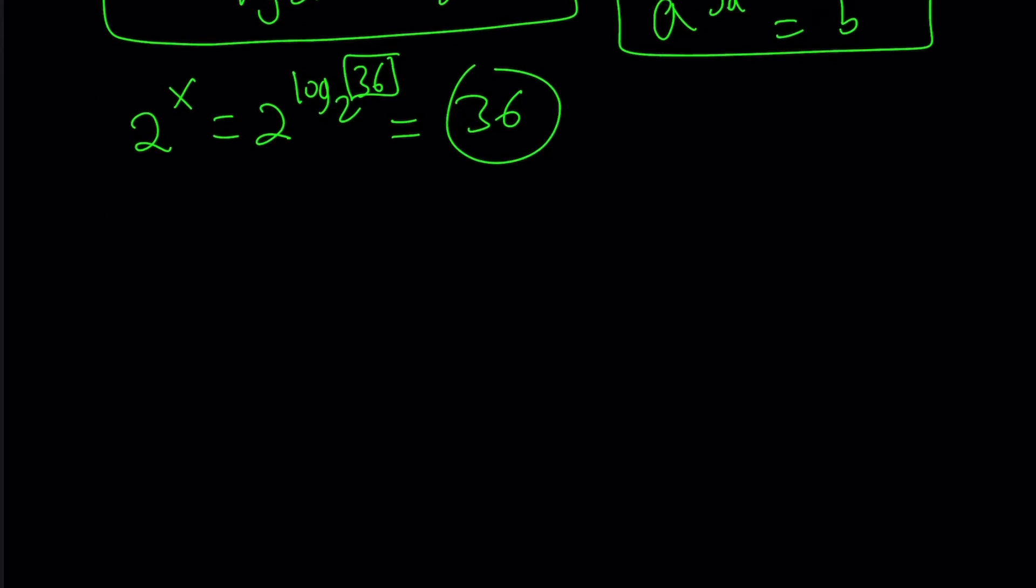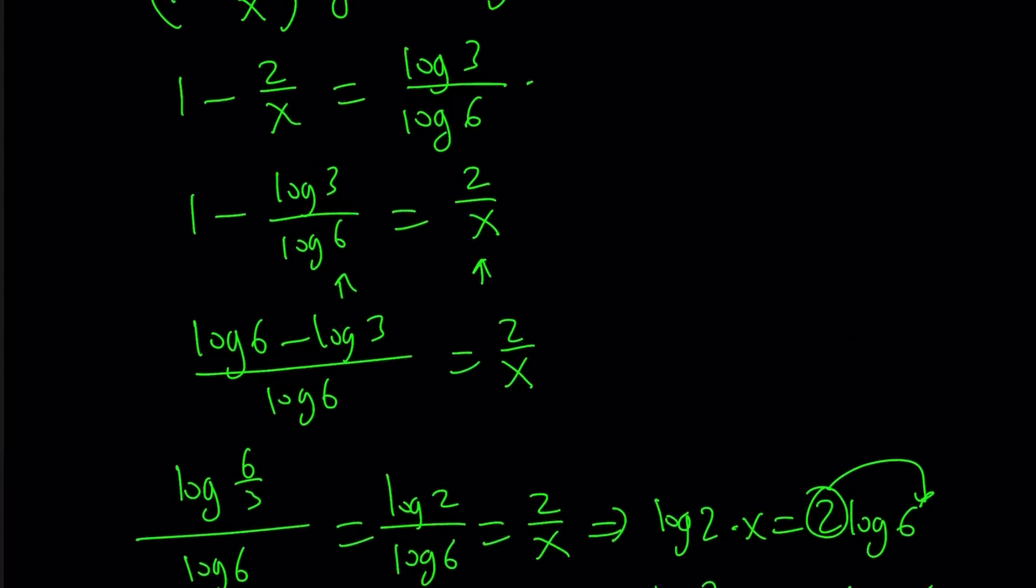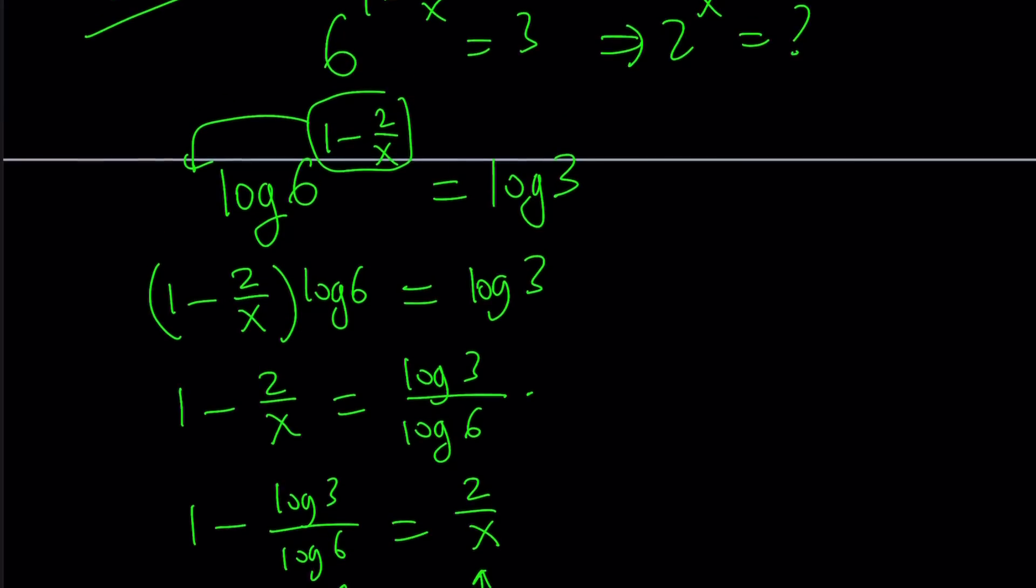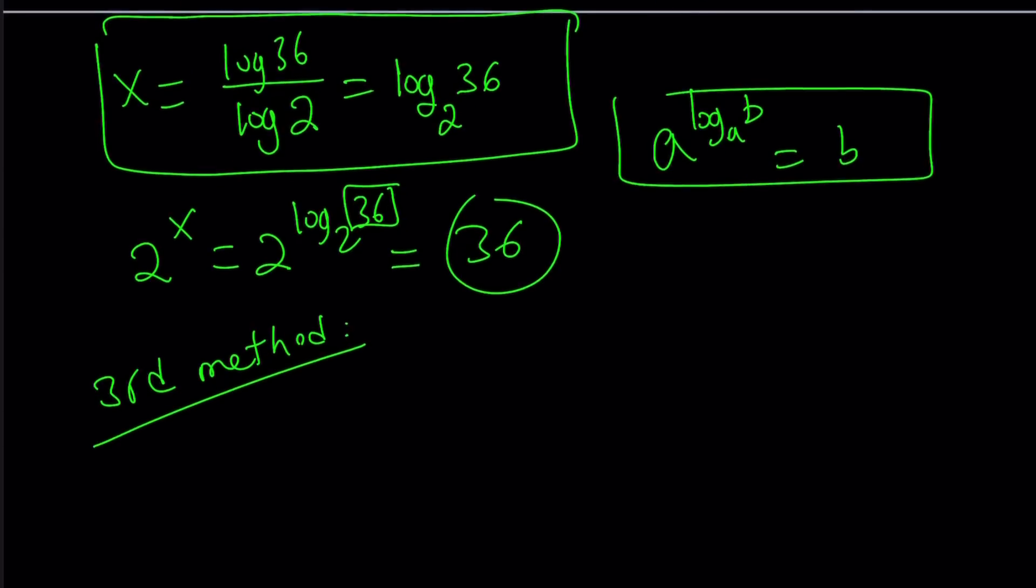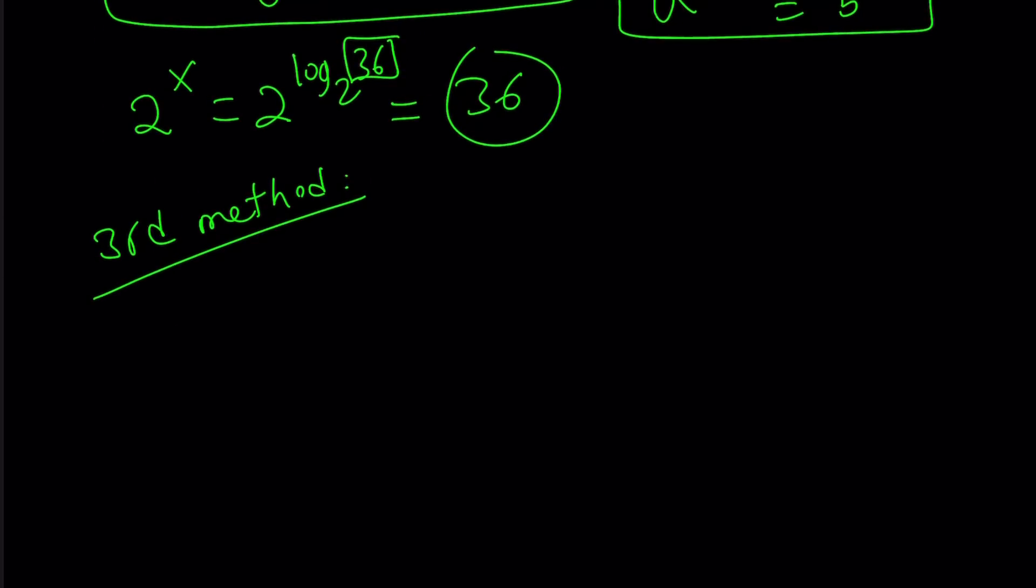Let's go ahead and take a look at the third method. So with the first method this is basically what we did. We logged both sides and then isolated x, solved for x and then we plugged it in. And obviously we used a lot of properties here. With the third method and let me rewrite the original problem one more time. 6 to the power 1 minus 2 over x equals 3. We're supposed to evaluate 2 to the power x.